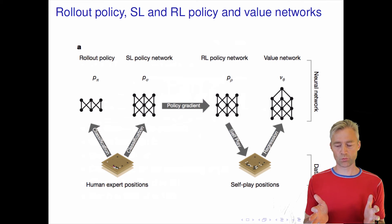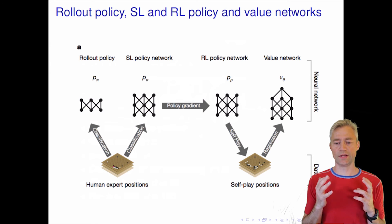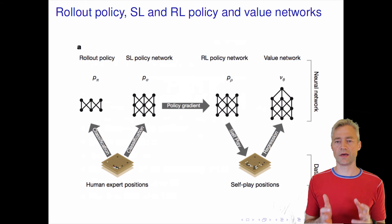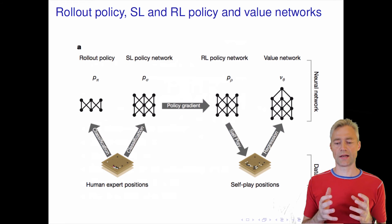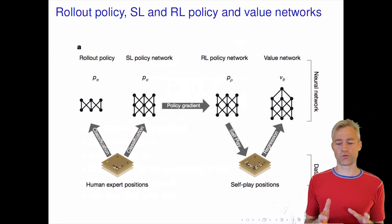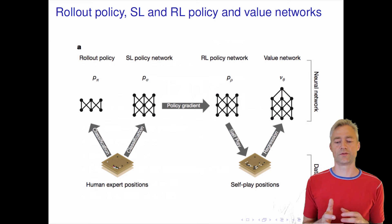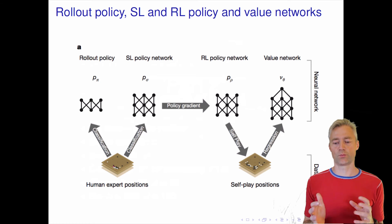Once we have achieved that, we also want a network that looks at the board position and gives an estimate of the probability that white will win the game. That is the value network.